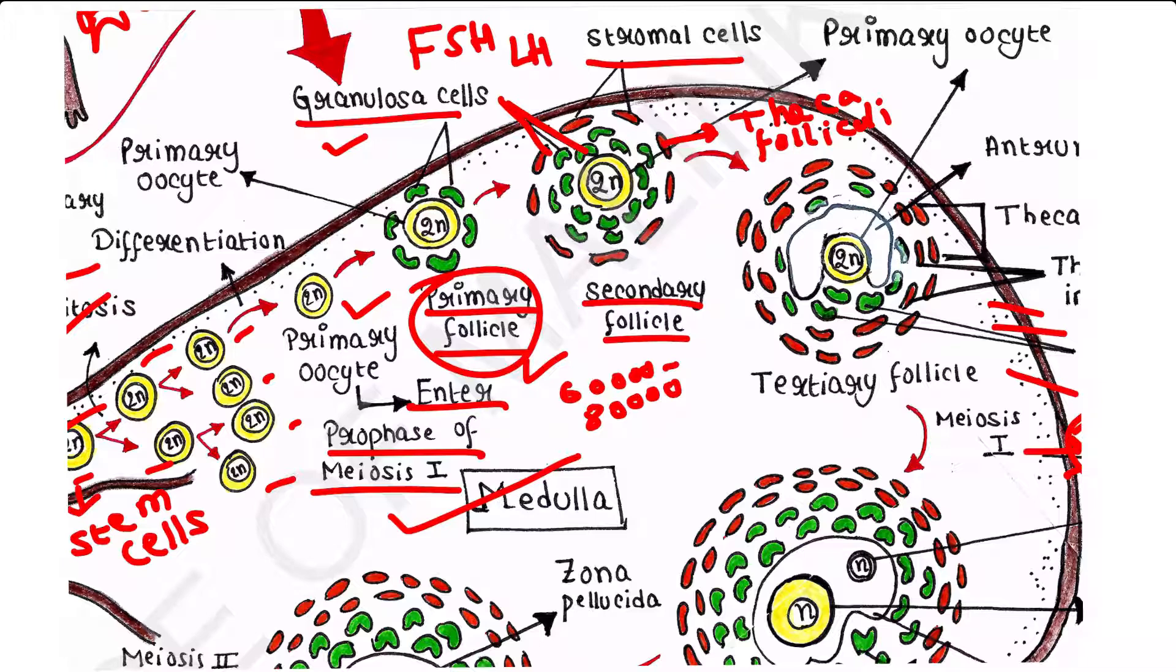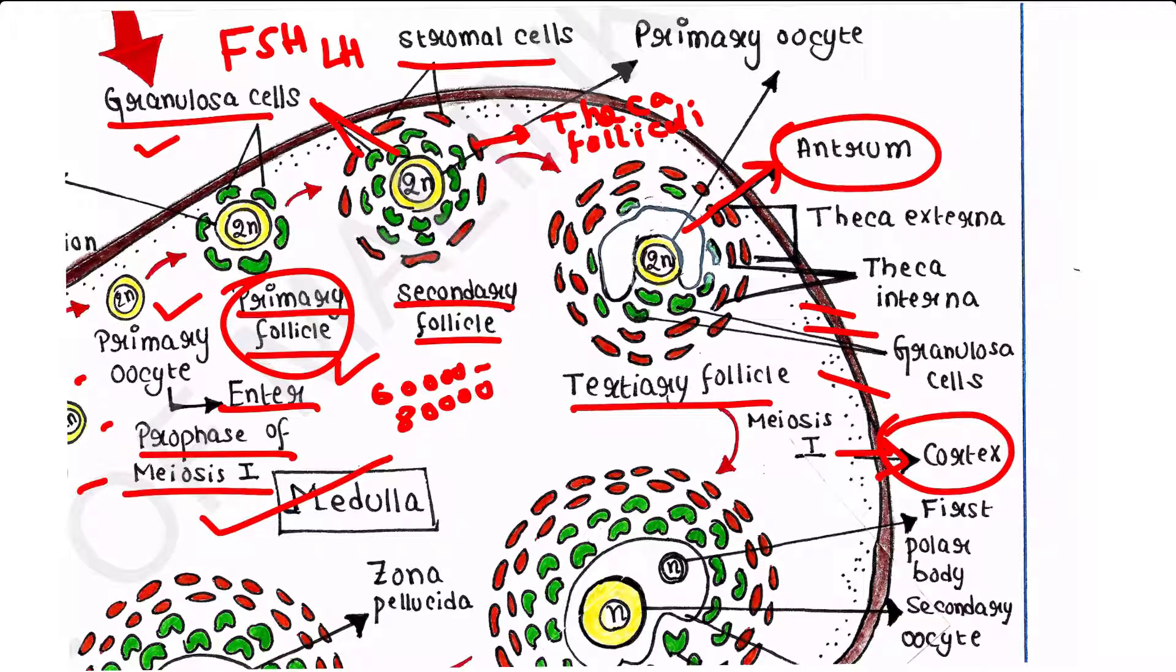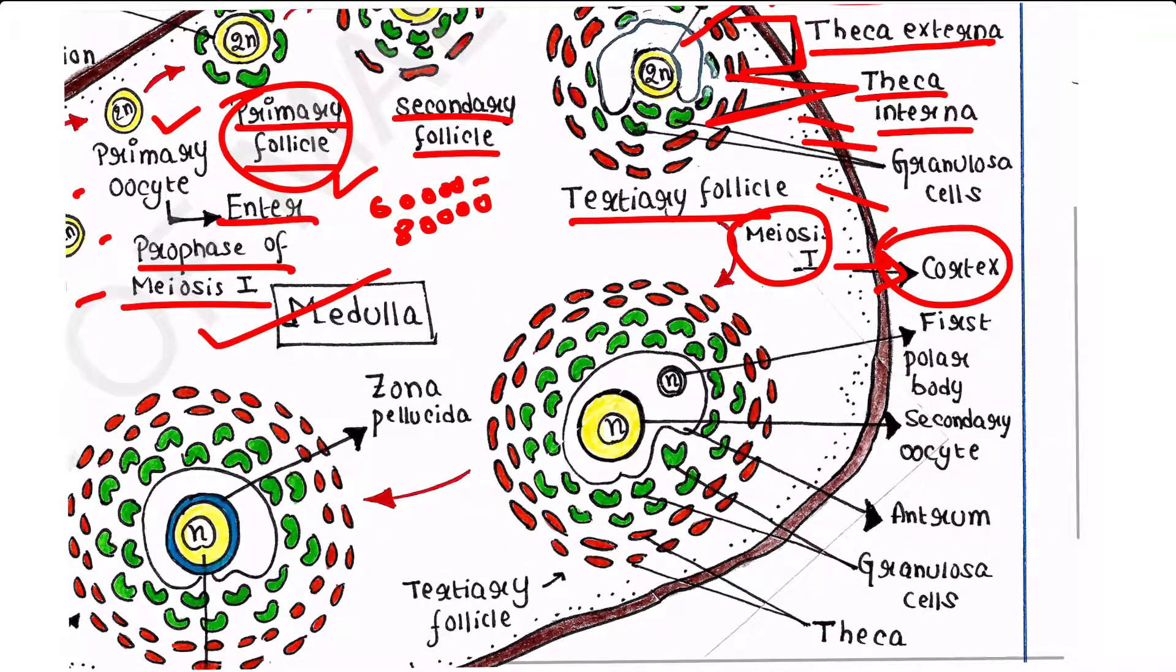The secondary follicle transforms into a tertiary follicle. An antrum forms, and the antrum is a fluid-filled cavity. The theca layer is now organized into theca interna, the internal layer of theca, and theca externa. At this stage, the primary oocyte within the tertiary follicle grows in size and completes its first meiotic division.